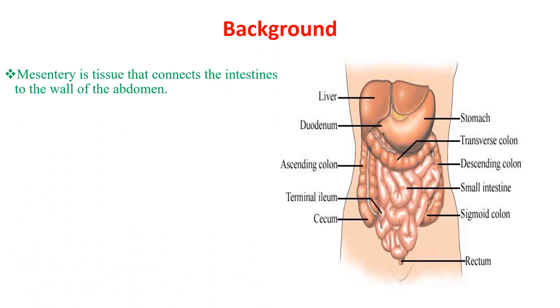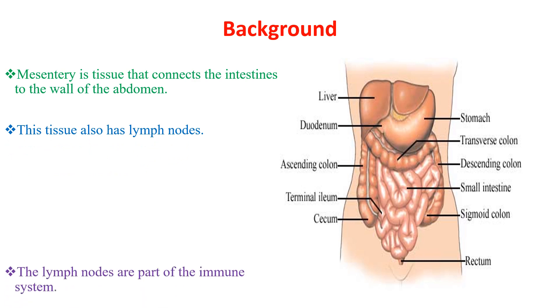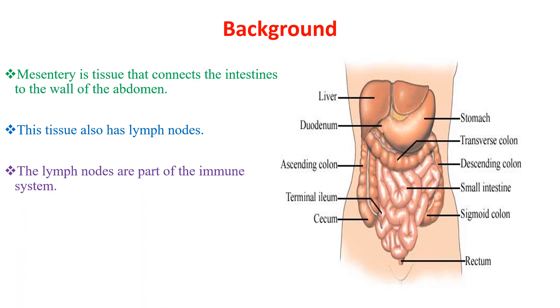Mesentery is a tissue that connects the intestine to the wall of the abdomen. This tissue also has lymph nodes. The lymph nodes are part of the immune system, so they get inflamed when there is some infection in the mesentery.